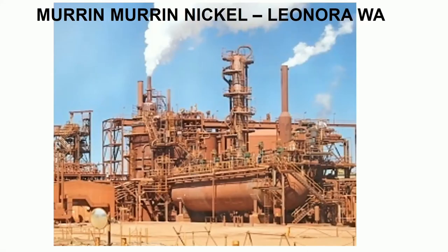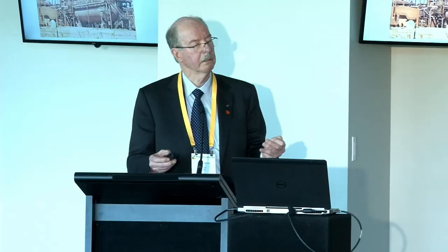At Murren Murren Nickel at Leonora, there was a failure in the first 24 hours of startup — 600-millimetre diameter valves failing. It was a $1 billion job that went to $1.6 billion, a huge commercial failure. The point is they should have modelled the high stresses, temperatures, acid, and pressure in a small laboratory rather than waiting until initial startup to find the valves were inadequate. Today Murren Murren is a profitable organisation delivering 30,000 tonnes per annum of nickel, but they could have been more profitable if they'd done the right thing earlier.